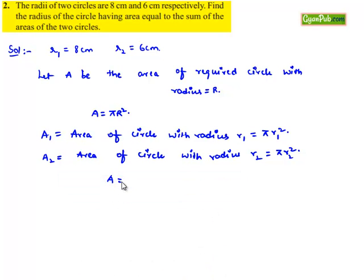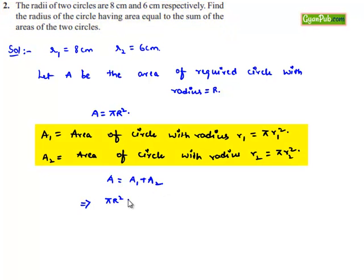According to the problem, the area of the required circle is equal to the sum of the areas of the two circles. That is, A equals A1 plus A2, which implies π R² equals π R1² plus π R2². Pi will be cancelled.